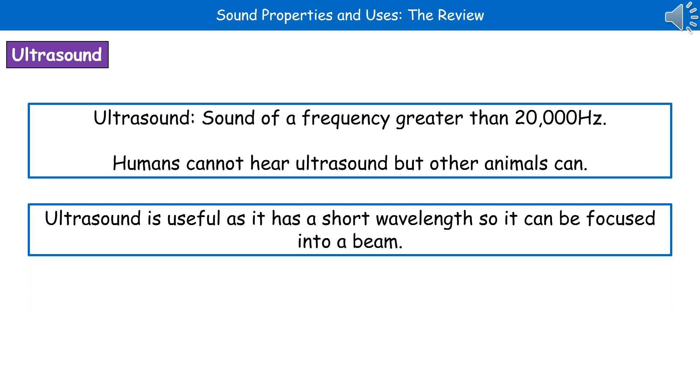The next thing we're going to consider is a type of sound called ultrasound. You need to know the definition for it first of all, which is a sound of a frequency that's greater than 20,000 Hertz. The thing to bear in mind about this is we can't hear it as humans. However, other animals, like dogs for example, they can hear ultrasound.